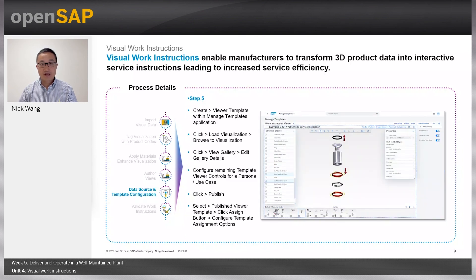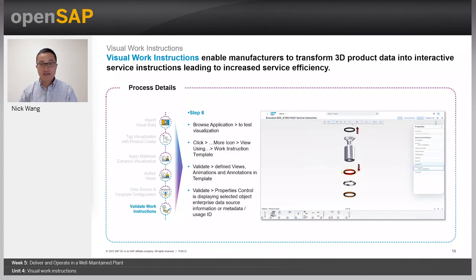Step five is to configure the viewer template so that users can create a custom 3D user interface by persona or use case — changing the look and feel of the viewport with no code at all. Within EPD visualization, we have the ability to connect and display business data from any backend system. For example, a product engineer may want to show product mass data from S/4HANA, while a service technician would also need information from S/4HANA. The last step is to validate the created work instructions in the viewer, ensuring that animations and annotations are displayed correctly in the configured viewer template, and that correct business data is displayed when an object is selected in the viewport.